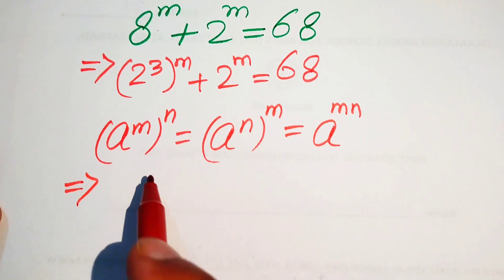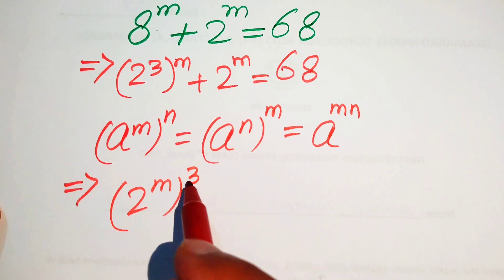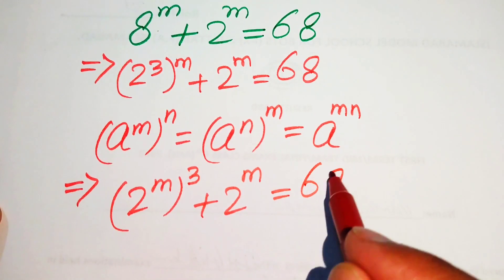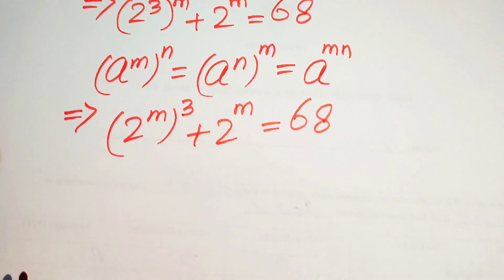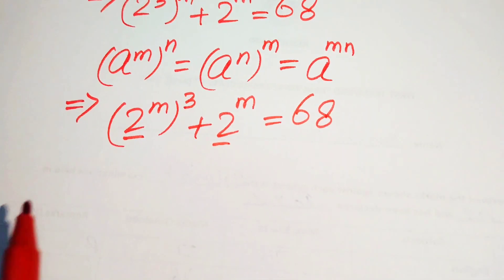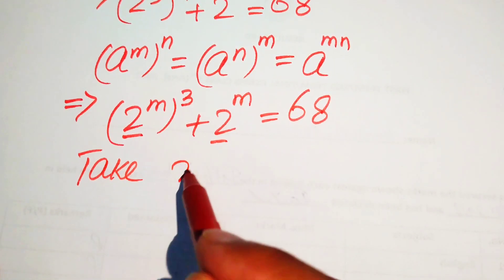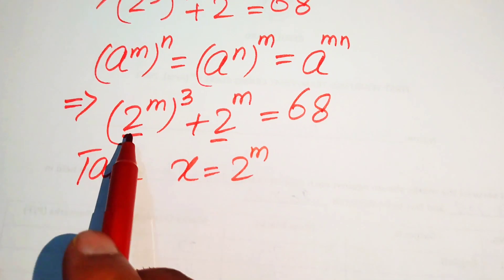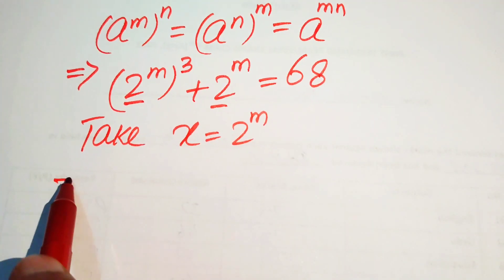Our equation is now written as 2 to the power of m, whole cubed, plus 2 to the power of m equals 68. You can see that 2 to the power of m is the same term in both places, so we substitute x equals 2 to the power of m.